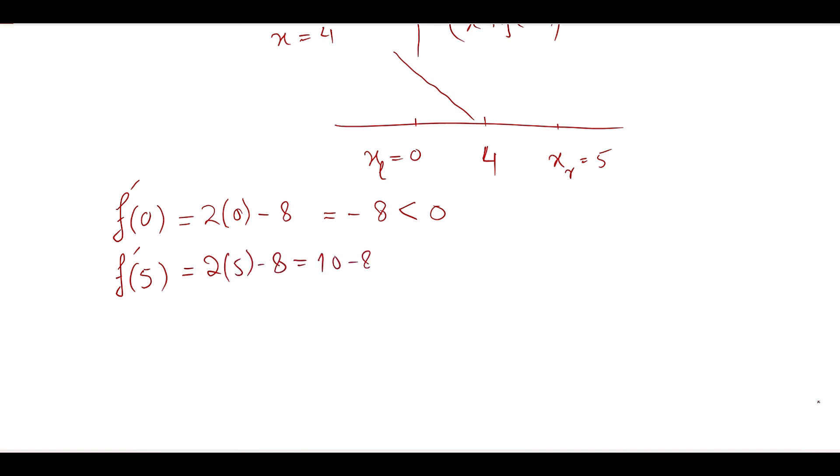Now putting x = 5 into the first derivative: 10 minus 8 is equal to 2, which is greater than 0. This means that to the right of 4, the derivative is positive.